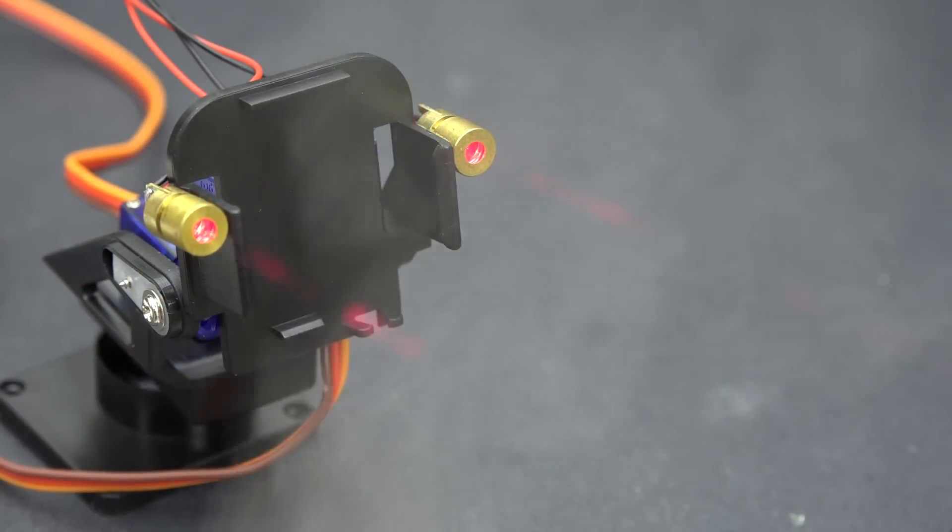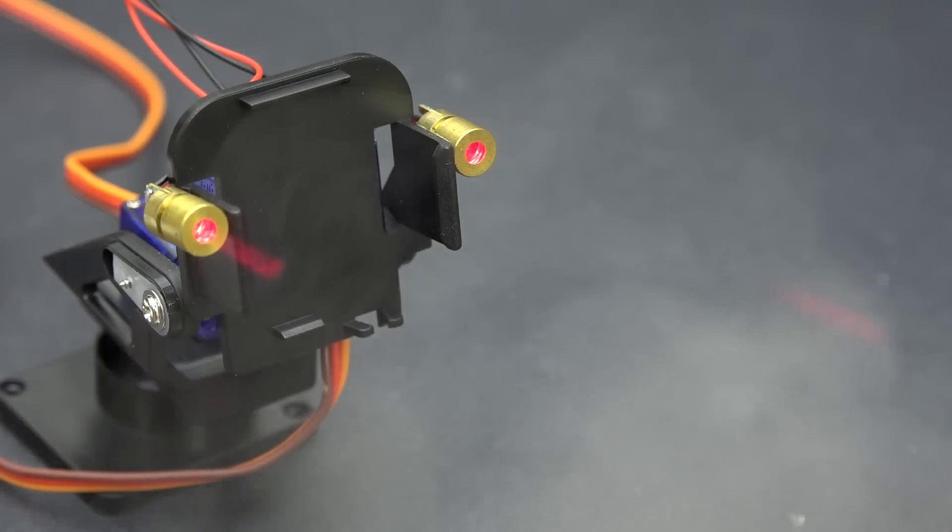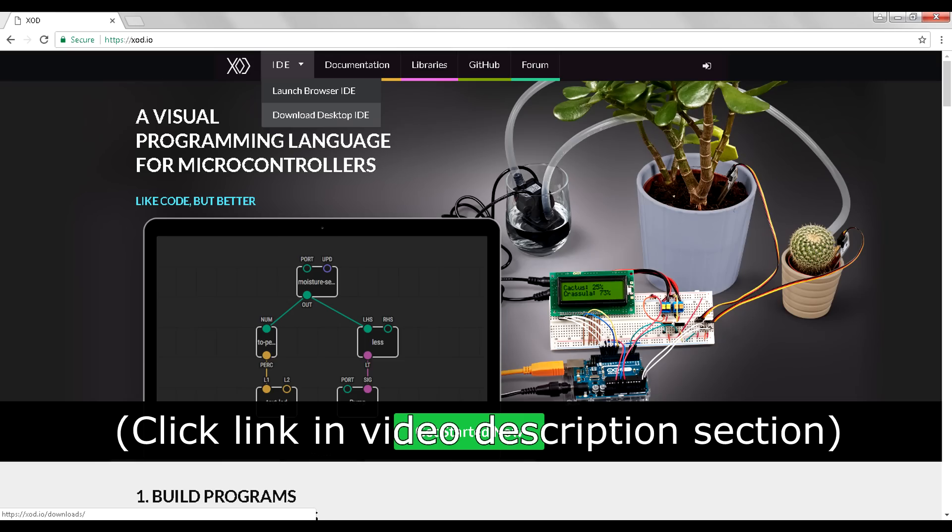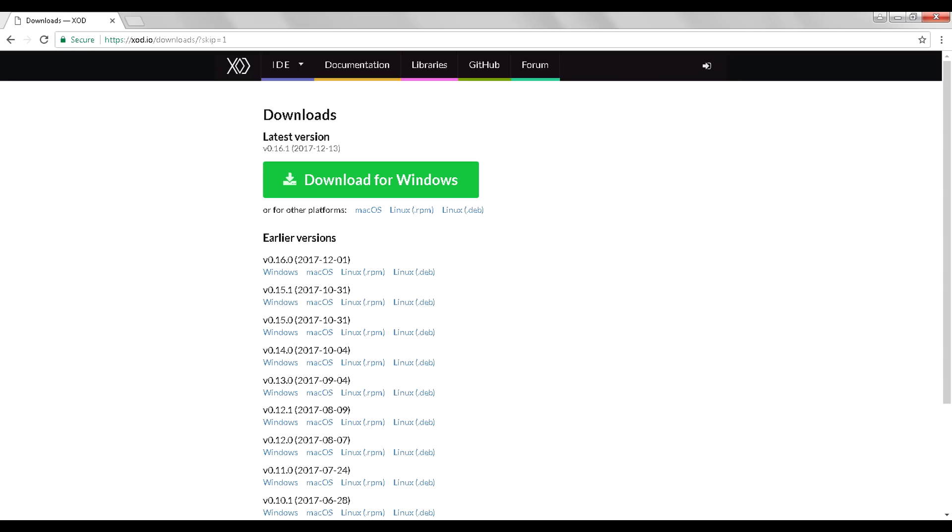Okay, that takes care of the hardware side of things. Now let's talk about programming the Arduino so we can control the servos with the potentiometer. We're going to be using a free open source visual programming environment called Zode. Go to xod.io, then click IDE, Download Desktop IDE at the top. Register if you want, but I'm going to proceed without registration.